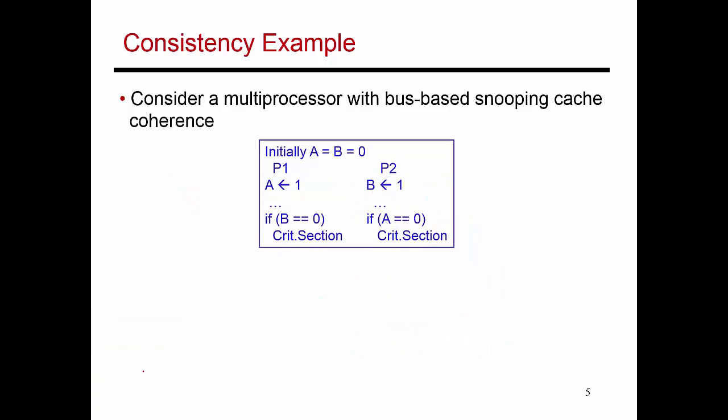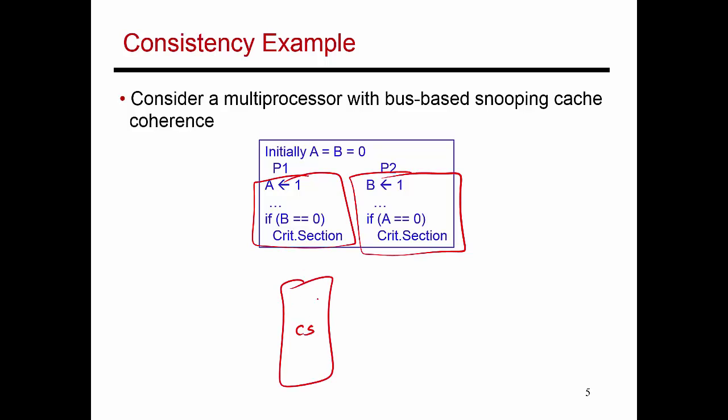The reason the program behaved badly on the out-of-order processor is because it had a race condition — both sections of code touch A and B, and at least one thread is modifying them. The easy fix is: when you identify a critical section with a race, carefully encapsulate it inside a lock. Acquire the lock, be the only one executing that code, then release the lock. This prevents multiple threads from accessing the variables at the same time.